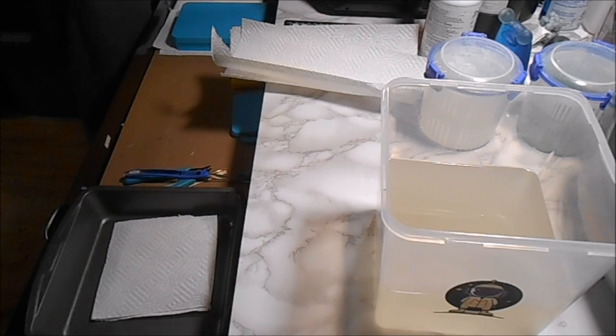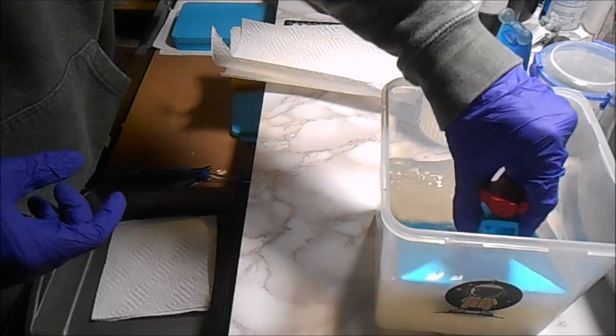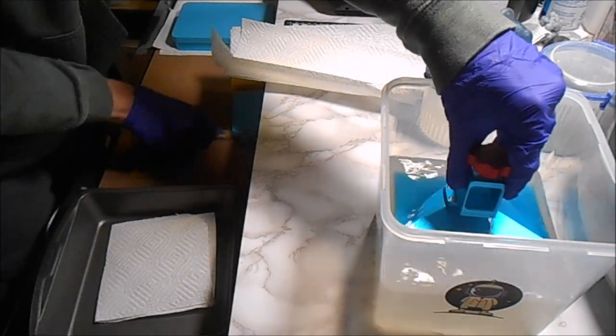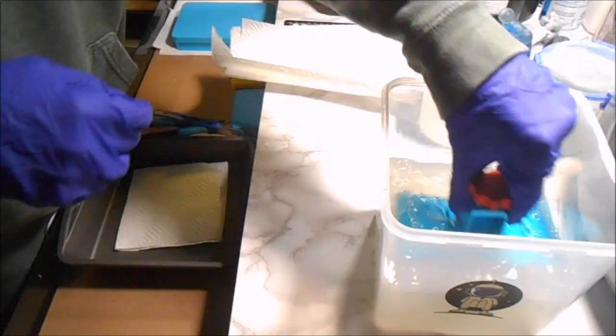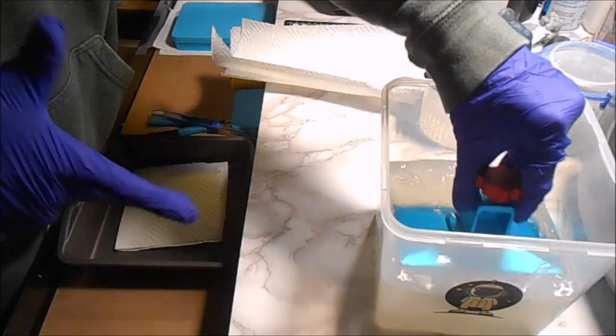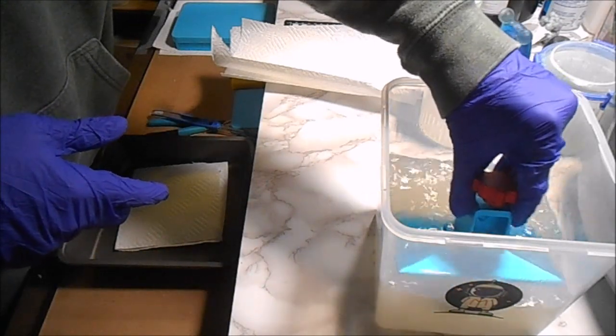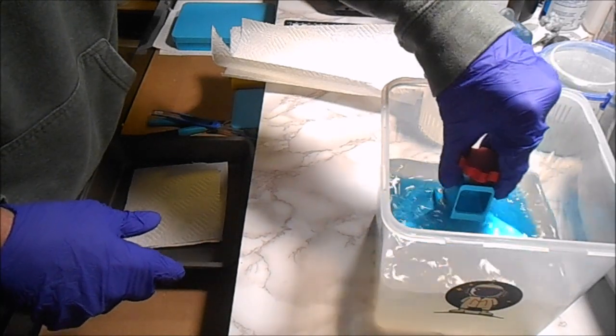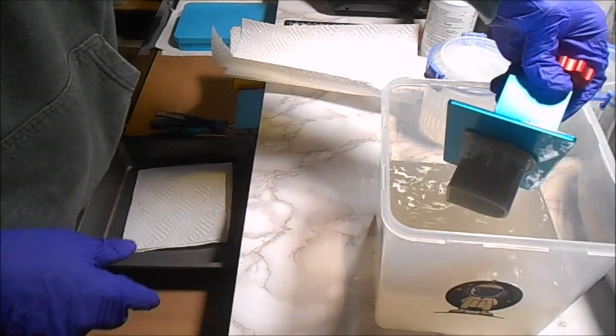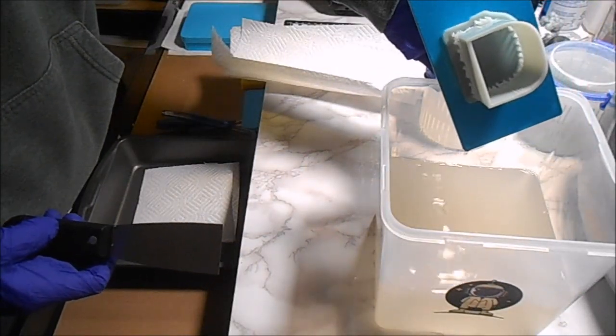I'm going to remove the print from the printer. Bring the build plate over and give it a good swoosh in the IPA. Really, this is a whole lot of time for most of the Siraya Tech resins that I've dealt with. Usually, you only want to rinse it for like 10-15 seconds or so. But I like doing this on the build plate because it helps clean the build plate off in the same process as getting the print cleaned off.